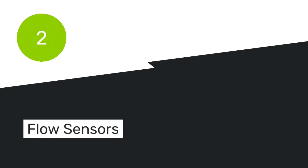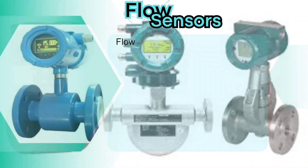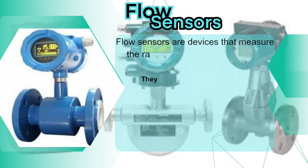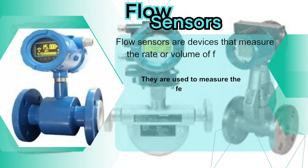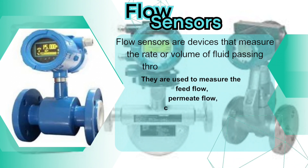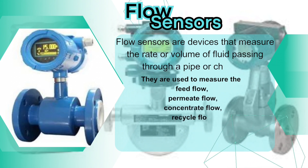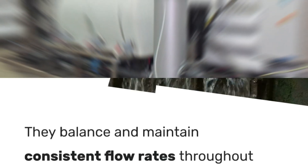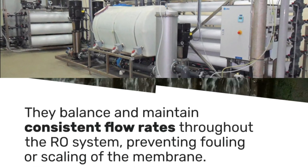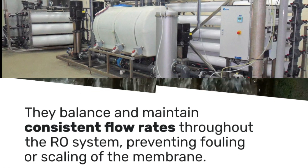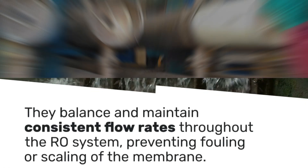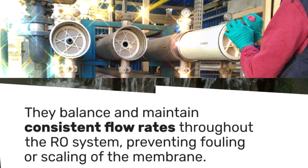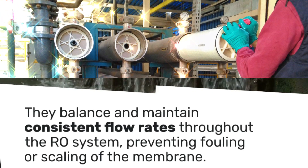Number 2: Flow Sensors. Flow sensors are devices that measure the rate or volume of fluid passing through a pipe or channel. They are used to measure the feed flow, permeate flow, concentrate flow, recycle flow, and bypass flow of the RO system. Flow sensors help to optimize the RO process by ensuring that the flow rates are balanced and consistent throughout the system. They also help to prevent fouling or scaling of the membrane by maintaining adequate cross-flow velocity and turbulence.